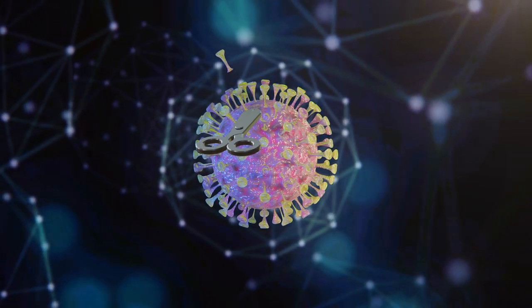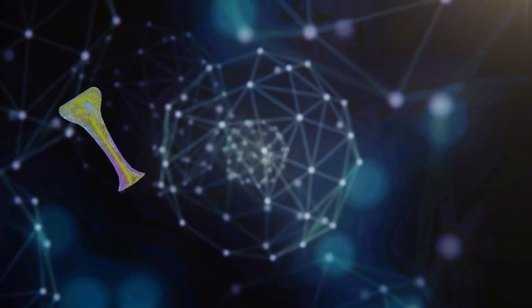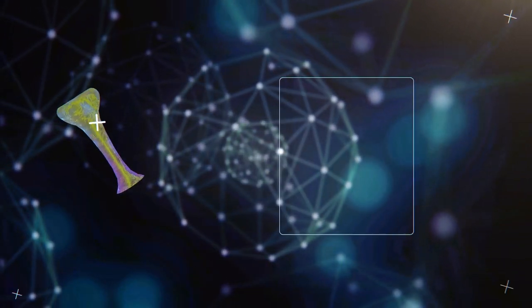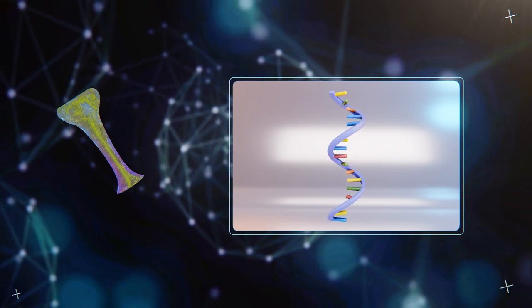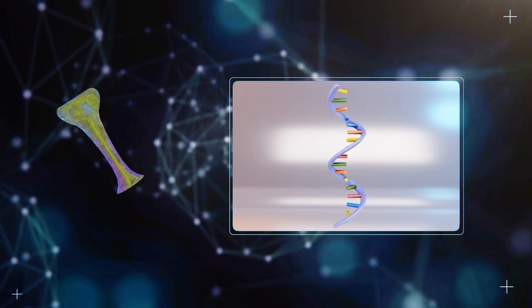Sputnik V employs a gene with the code for the spike protein that the coronavirus uses to enter a human cell. The spike protein gene is cut from the coronavirus and inserted into a vector, a virus that is weakened so that it cannot grow inside the human body after injection.